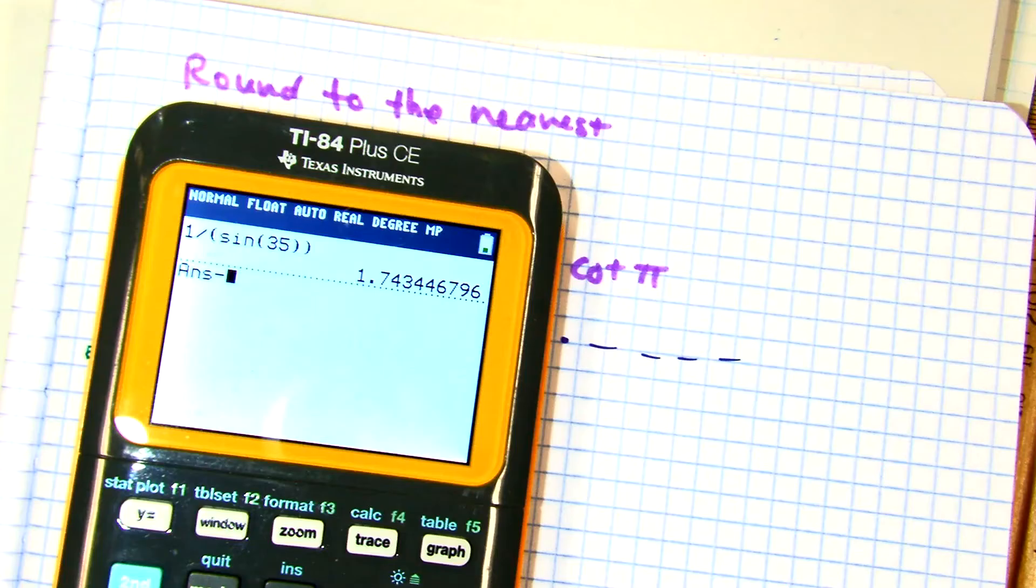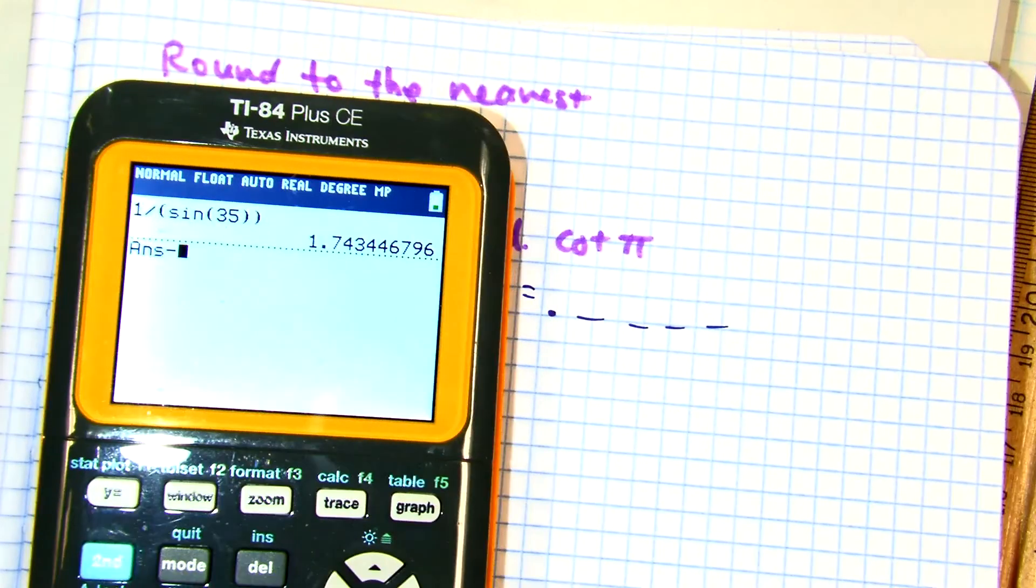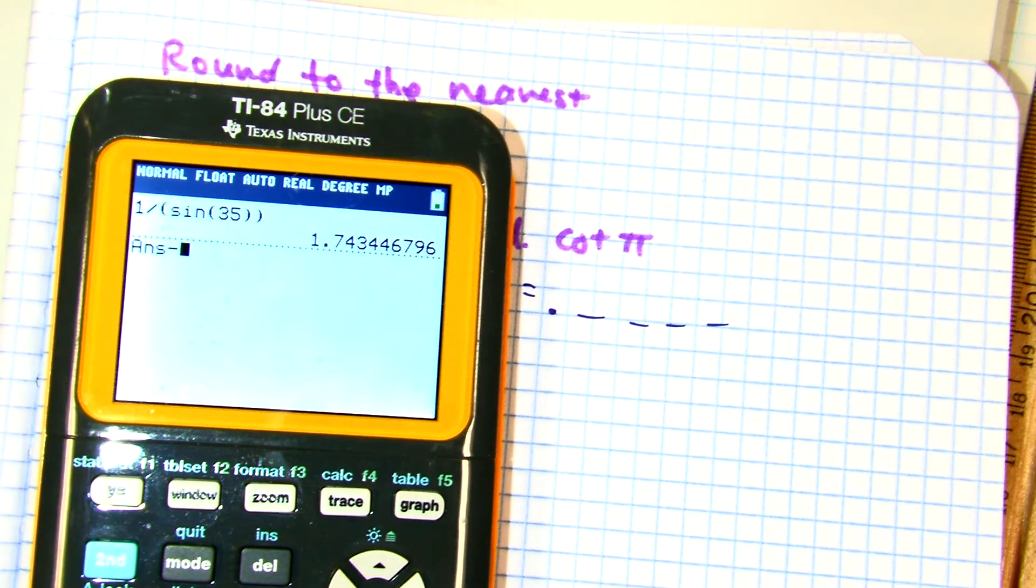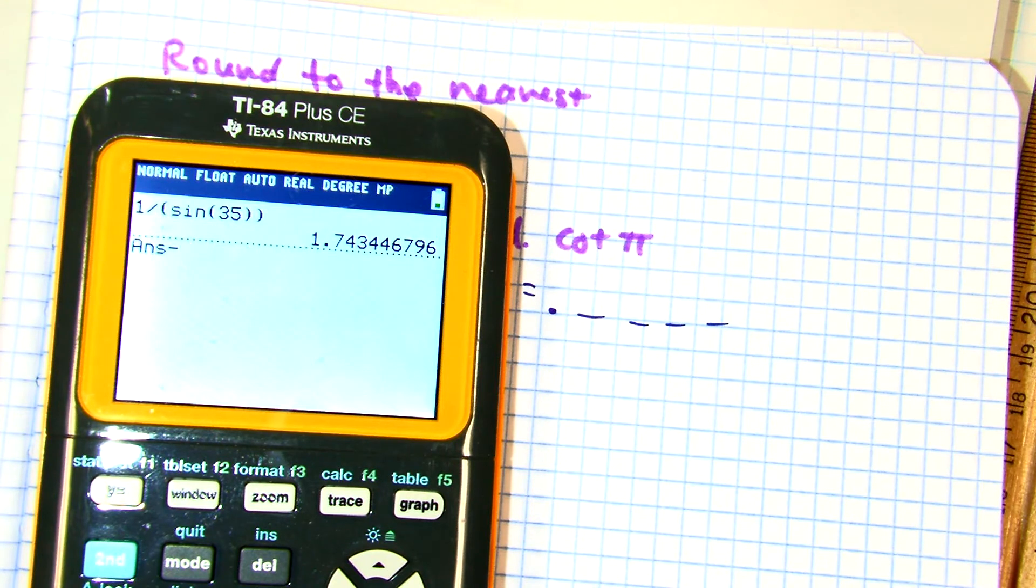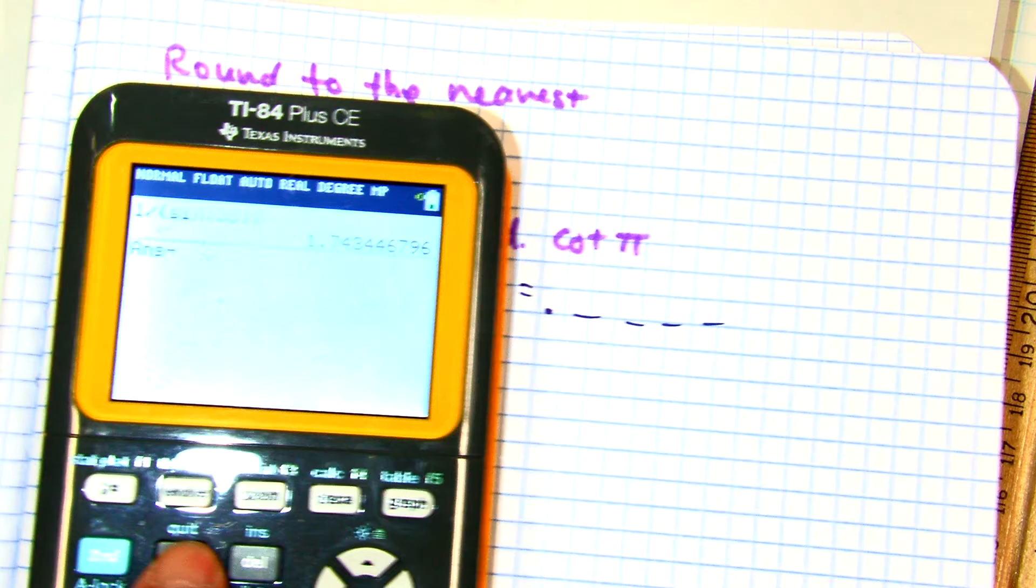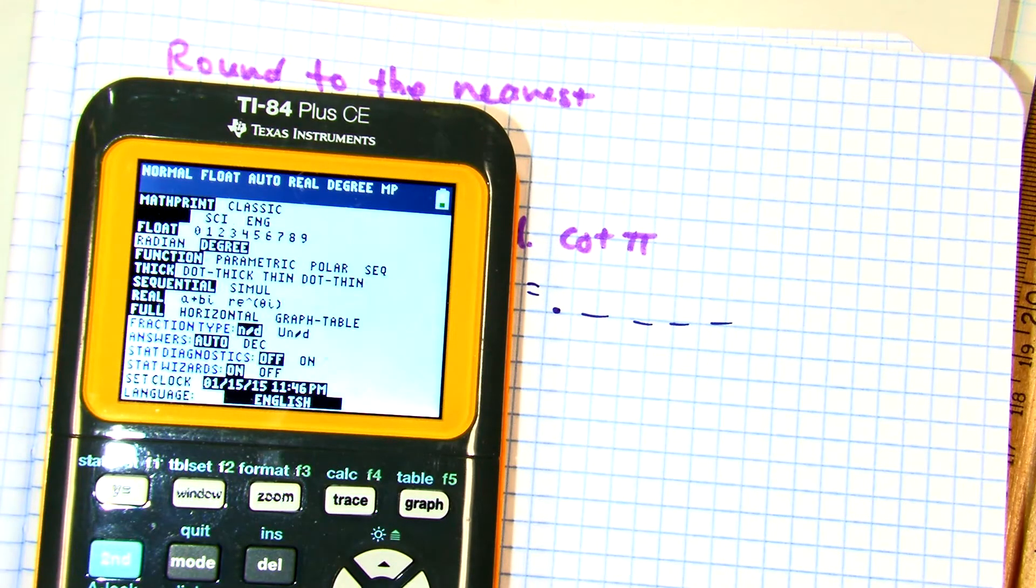Cindy is my calculator in radian mode? Okay. How do I get it to radian mode? So, we're going to press mode. And then, what do I need to press now? Radians.